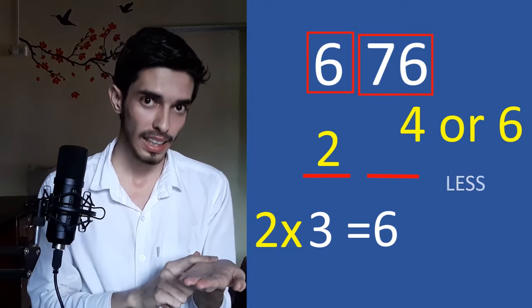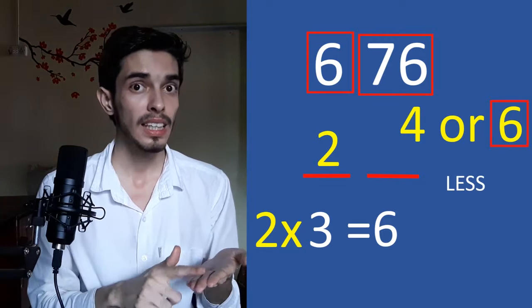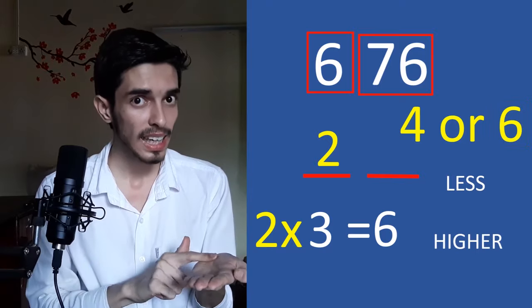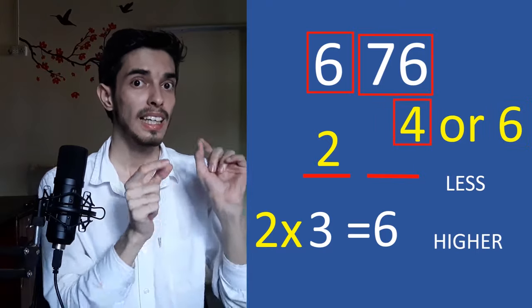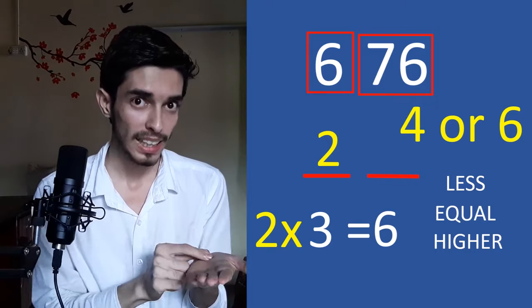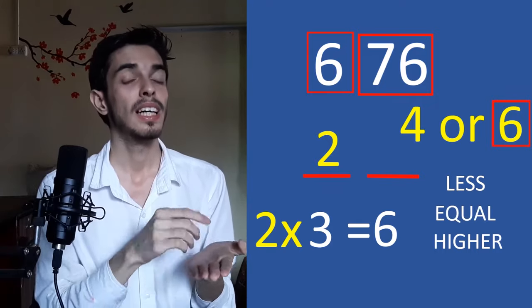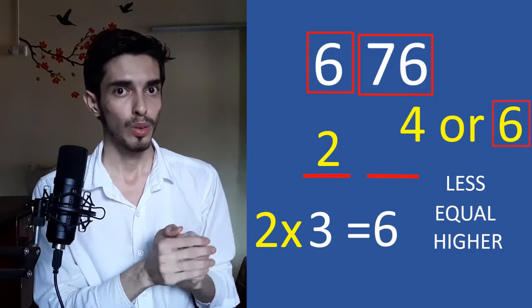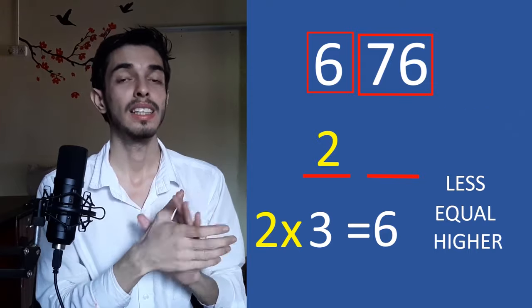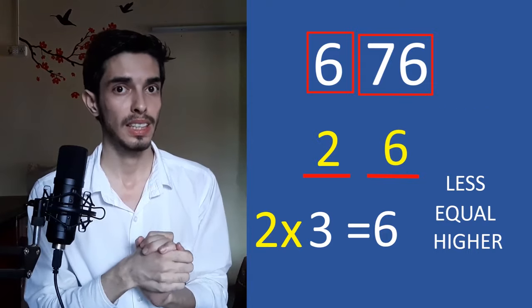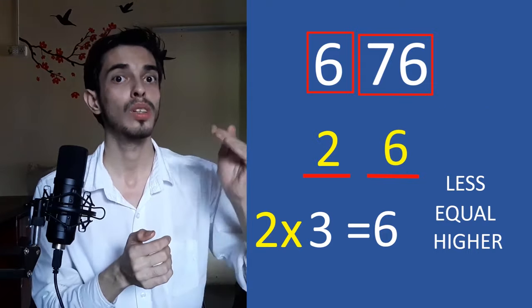So, remember this. If this digit is less than that, then go with the higher one. If this digit is higher than that, then go with the lower one. And if this digit is equal to that, then also go with the higher one. So, we had 2 and the other one is 6. So, the answer of this is 6 because 4 is the lower one. So, we won't go with that.